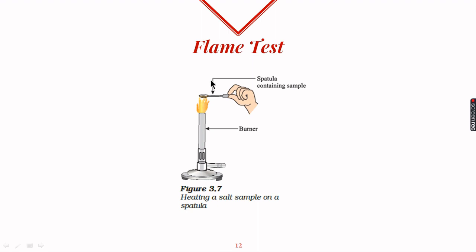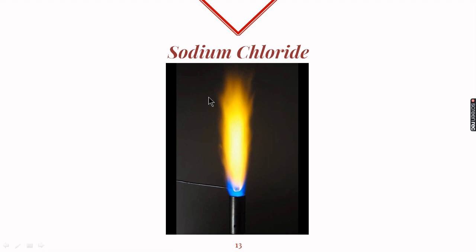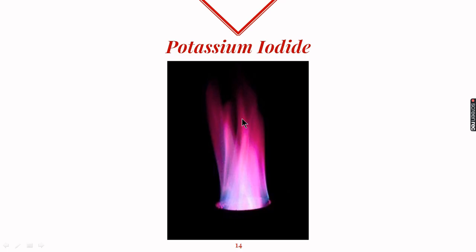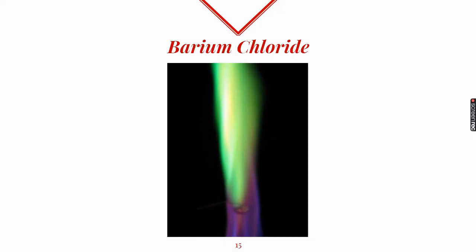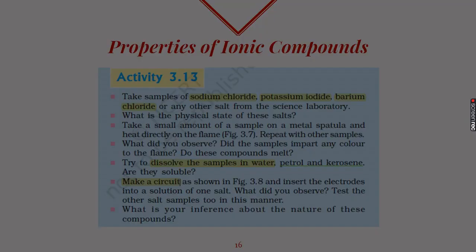Sodium chloride burns with a golden yellow colored flame. Potassium iodide burns with a violet colored flame, while barium chloride burns with an apple green colored flame. The colors of these flames are due to the metals sodium, potassium, and barium.